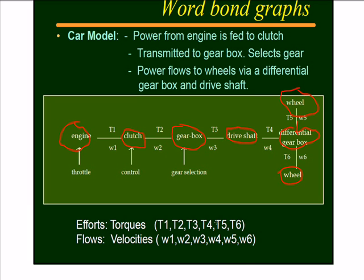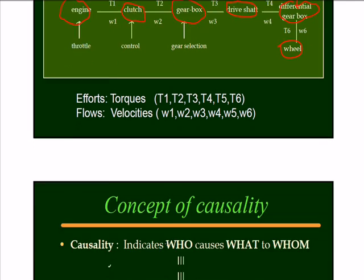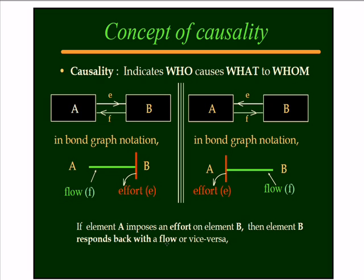So that way we can integrate an entire system. But the point here is that all these efforts, so-called torques, t1, t2, t3, t4, t5 will become the e-variable. And the velocities, where they is represented here with w1, w2, and w3, this would be the flows.